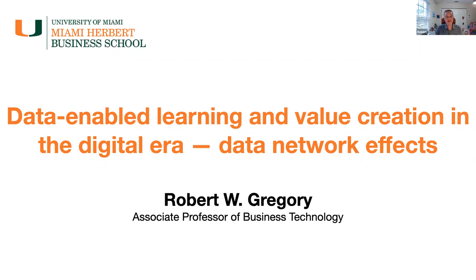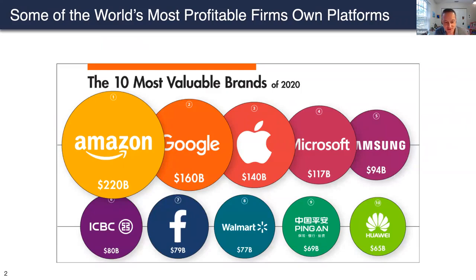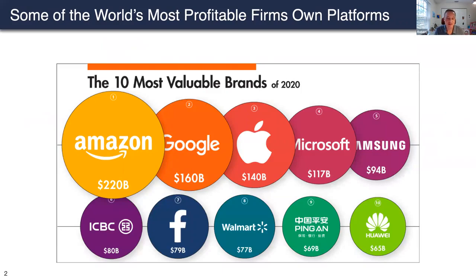The concept we developed in this work is data network effects — it's a conceptual piece. Some of the world's most profitable firms own platforms, and as we know, these platforms exhibit network effects. A platform or one of its products or services exhibits network effects if the more people that use it, the more valuable it becomes to each user. Essentially, the perceived value of a user on a platform is a function of the size of the network.